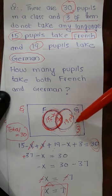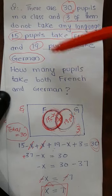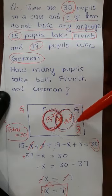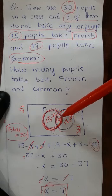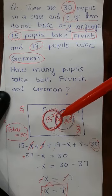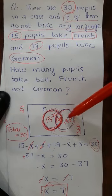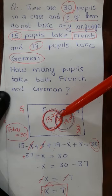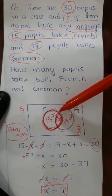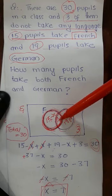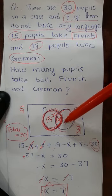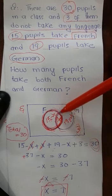Similarly, German language is studied by 19 pupils. This circle represents German language and in total we have 19 students here. But because some students are studying German as well as French, we have assumed X students are in the overlapping part. The rest of the students studying only German are in the non-overlapping part, which is 19 minus X.